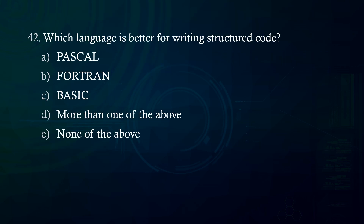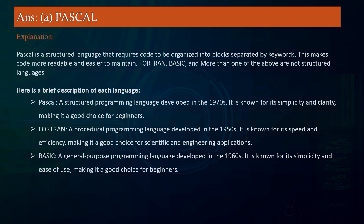Which language is better for writing structured code? A. Pascal B. Fortran C. Basic D. More than one of the above E. None of the above. Answer: Pascal. Explanation: Pascal is a structured language that requires code to be organized into blocks separated by keywords, making code more readable and easier to maintain. Fortran and Basic are not structured languages. Pascal is a structured programming language developed in the 1970s, known for its simplicity and clarity. Fortran, developed in the 1950s, is known for speed and efficiency for scientific applications. Basic, developed in the 1960s, is known for simplicity and ease of use.